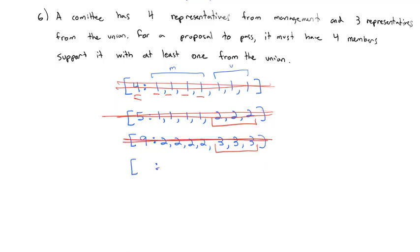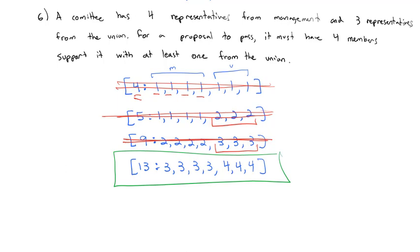Let's give management three votes each and union four votes each. Management totals 12, so setting quota at 13 means management alone can't pass a motion. The three union members also total 12, so they can't pass without a fourth member from management joining them. This weighted voting system correctly represents the situation: four votes required, with at least one from the union.